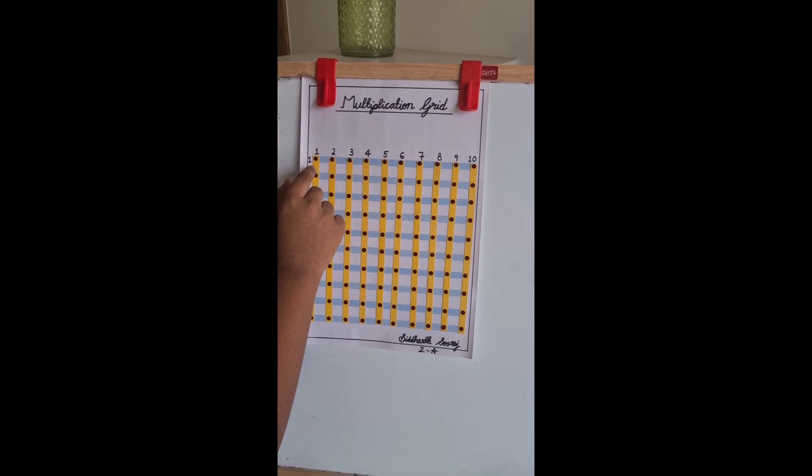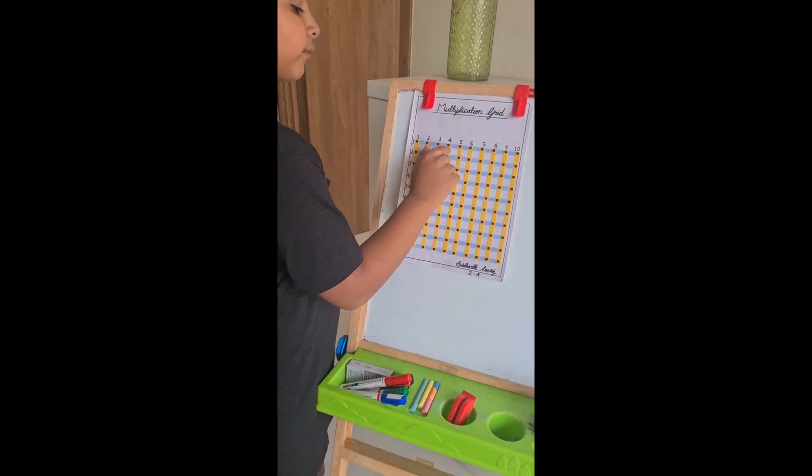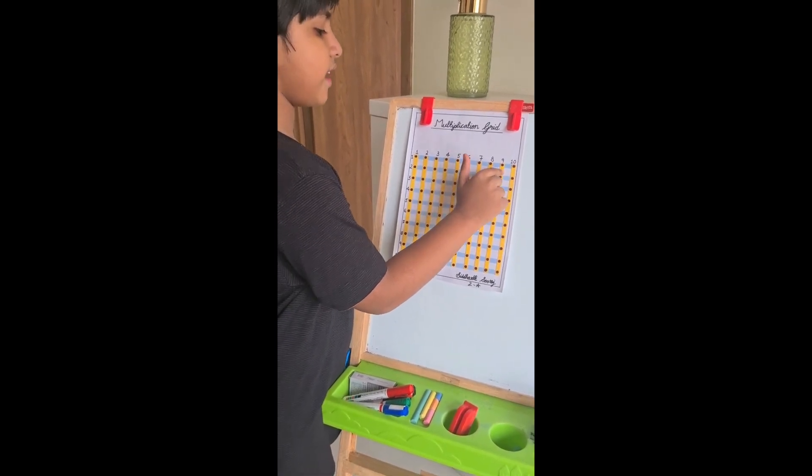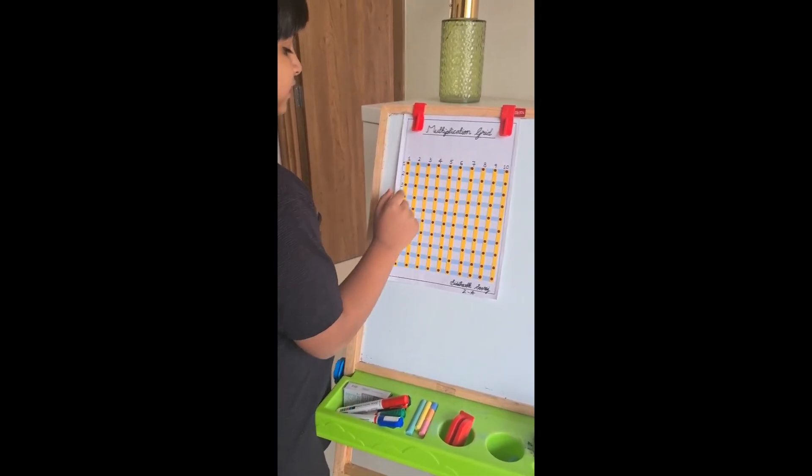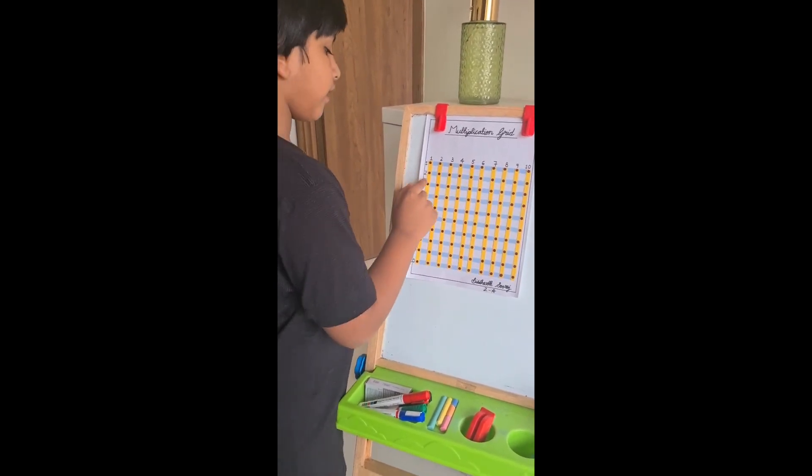In the first row, there are 1, 2, 3, 4, 5, 6, 7, 8, 9, 10 bindis. So, 10 times 1 equals 10.